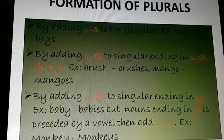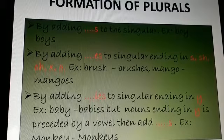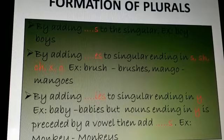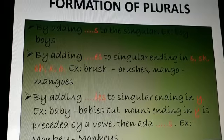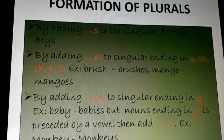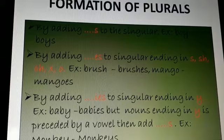So by adding, the next rule is by adding i-e-s, ies to singular ending in y. So where the noun is ending in y. Example, baby, you are going to change it into a plural one by adding i-e-s.